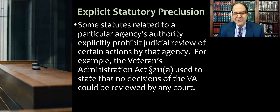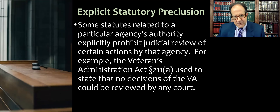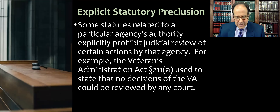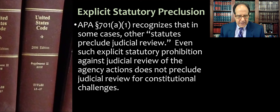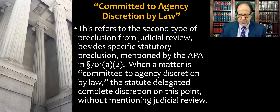Let's talk about explicit statutory preclusion, the first type. Some statutes related to a particular agency's authority explicitly prohibit judicial review of certain actions or decisions by that agency. An example in Johnson v. Robeson is the Veterans Administration Act, Section 211A, which used to state that no decisions of the Veterans Administration could be reviewed by any court, at least if they're about benefits. APA 701(a)(1) recognizes that in some cases other statutes preclude judicial review. Even such explicit statutory prohibition, though, does not preclude judicial review for constitutional challenges.